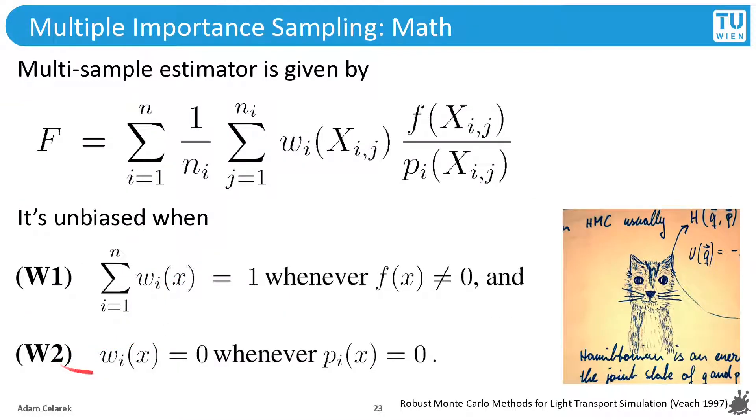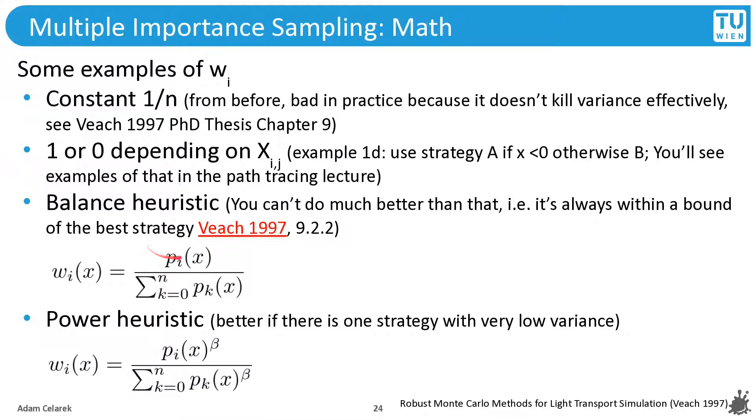What about the other thing? Weights 0 whenever the probability is 0. This is also clearly the case, because this will become 0 divided by something. It's always 0. Okay, and we will use this balance heuristic shortly in order to show you a practical example.